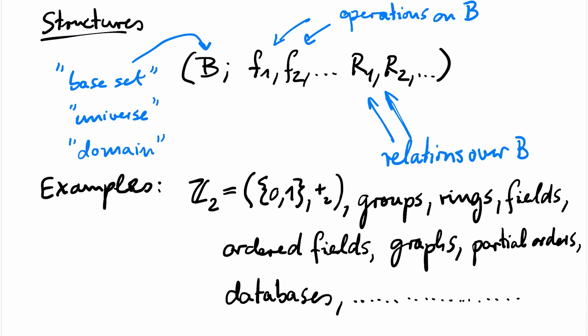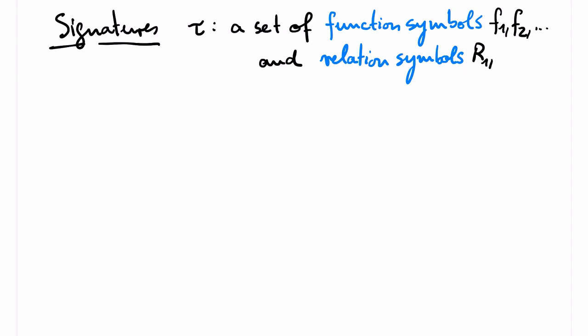We now introduce structures formally. For that, we have to start with the concept of a signature. This is simply a set of function symbols, typically denoted by f1, f2, and so on, and relation symbols, typically denoted by r1, r2, and so on.